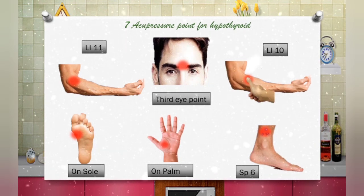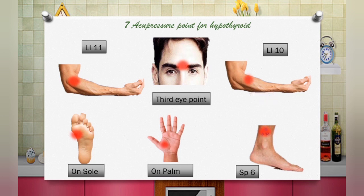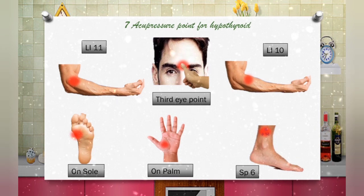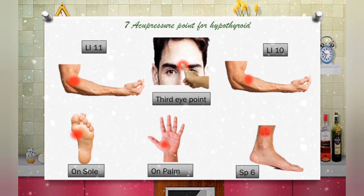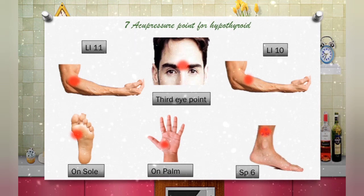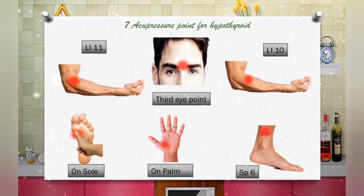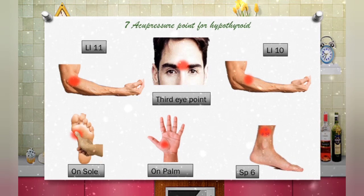Large Intestine 10 is an important acupressure point for hypothyroidism. It is located on the arm, also called Arm 3 LI, found on the dorsal radial side of the forearm. When the elbow is flexed, it helps in stimulating and moving the blood and Qi for better functioning of the thyroid gland. It is located at the point of the tennis elbow and is also used for addressing shoulder pain, diarrhea, neck pain, and stiffness.